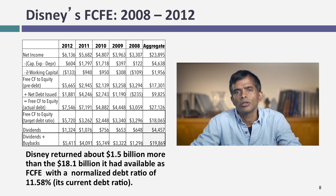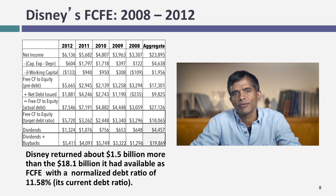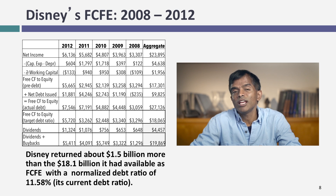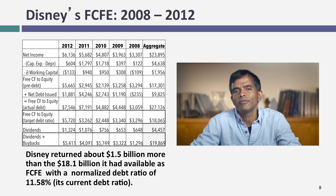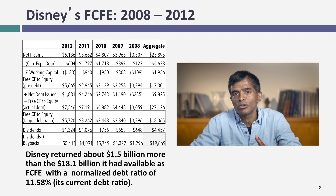You might ask why I'm not looking at individual years. Because strange things can happen in individual years — working capital can increase or decrease — so I'm looking across time to get a normalized value. $18.1 billion is what they could have returned. What they actually returned was $19.9 billion. So in a sense, they returned about $1.8 billion more cash than their free cash flow to equity would suggest. For the moment, that's a very simple starting process for assessing dividend policies — comparing what gets actually returned to what could have been returned.